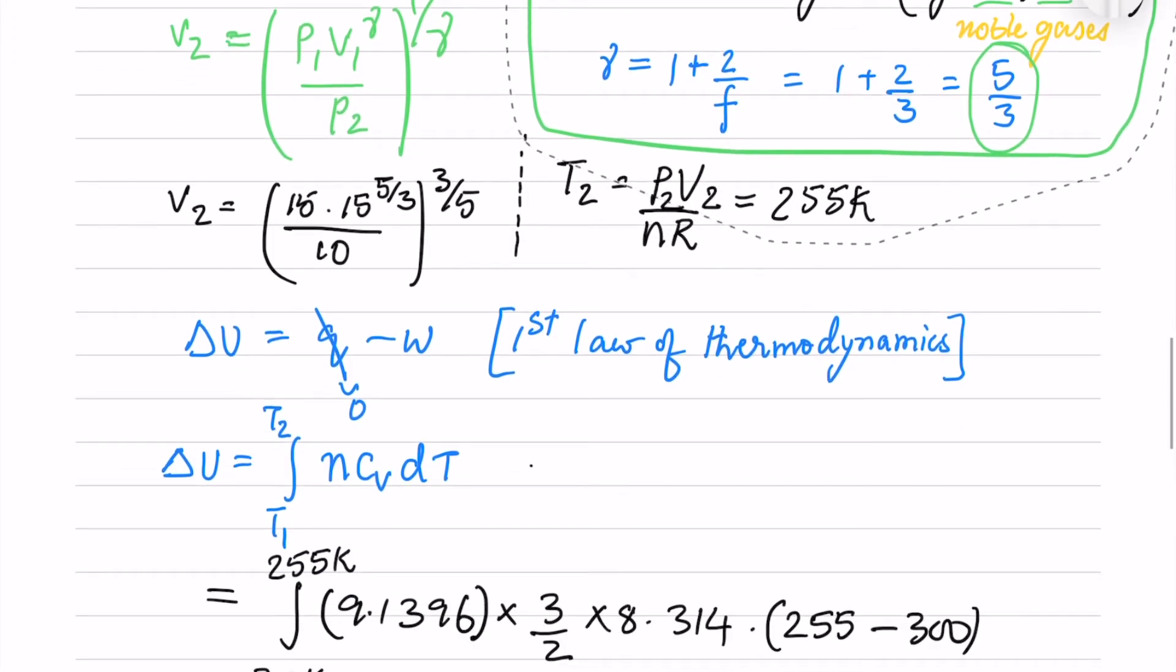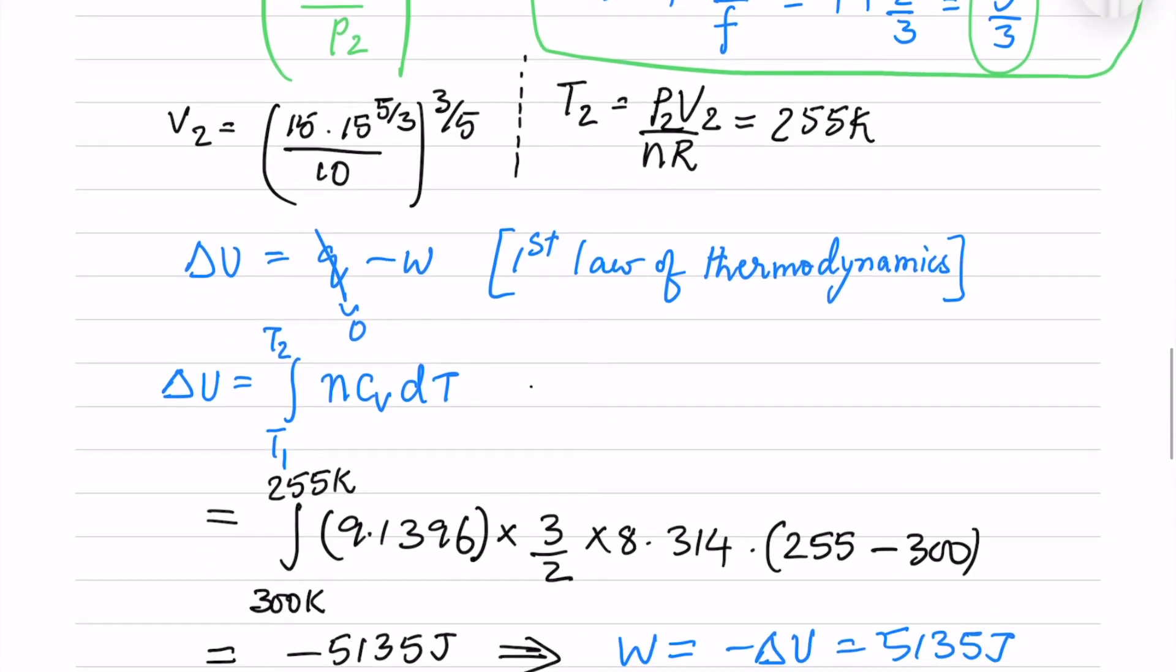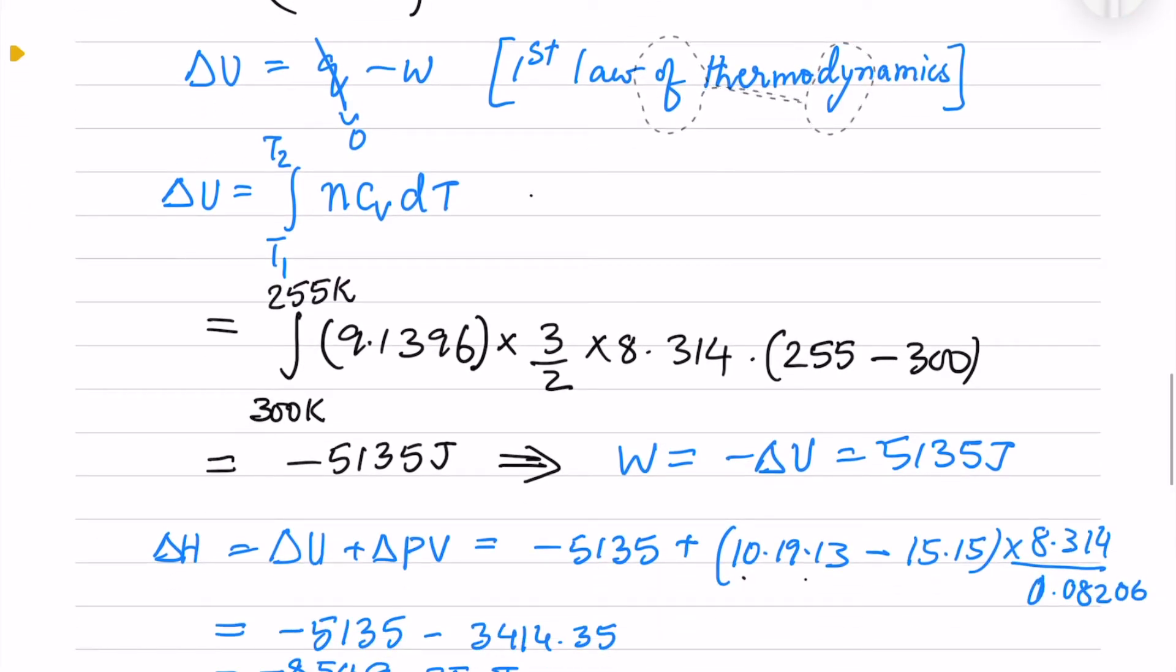Delta U equals Q minus W from the first law of thermodynamics. Q is 0, and delta U equals nCv delta T. Cv is given as 1.5R, so we have 3/2 times 8.314 joules per mole Kelvin. We get delta U = -5135 joules, and the work done is minus delta U, which equals 5135 joules. The work is done by the system.